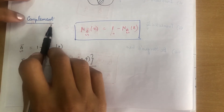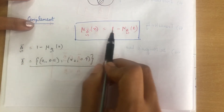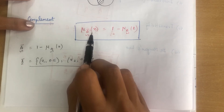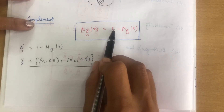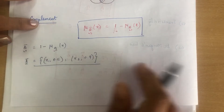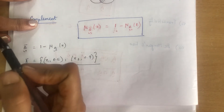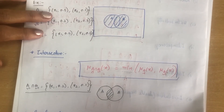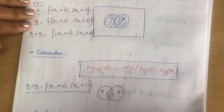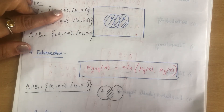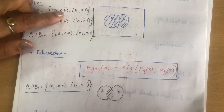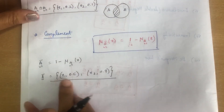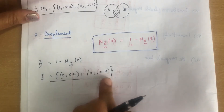For the complement, μ_{Ā}(x) = 1 − μ_A(x). Using the same set A = {(x₁, 0.5), (x₂, 0.1)}: 1 − 0.5 = 0.5 and 1 − 0.1 = 0.9. So Ā = {(x₁, 0.5), (x₂, 0.9)}.